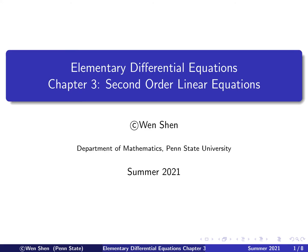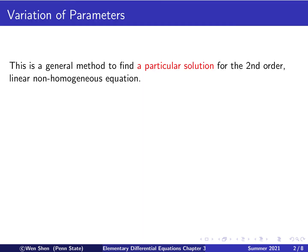Hello everyone, welcome to my videos on elementary differential equations. This is video number 18 for chapter 3. We now introduce a somewhat more general method, which is called variation of parameters. This is a method to find a particular solution for the second-order linear non-homogeneous equation once the solution of the homogeneous equation is given.